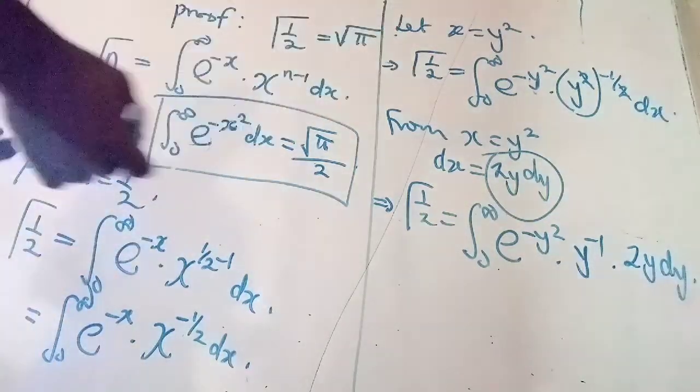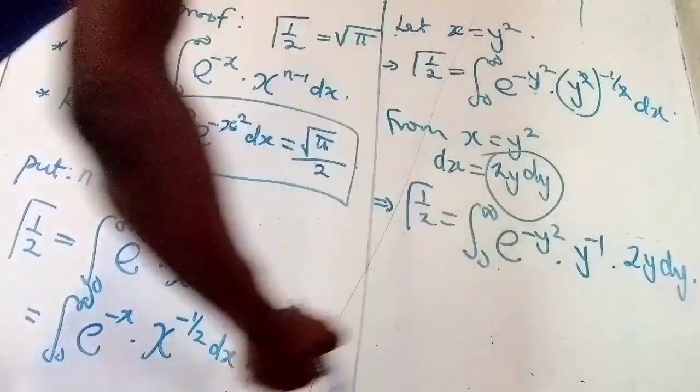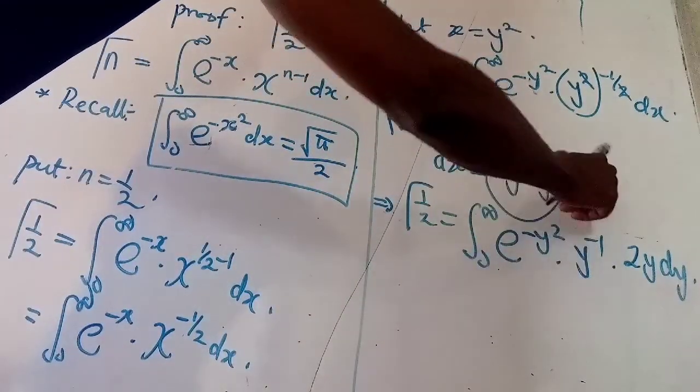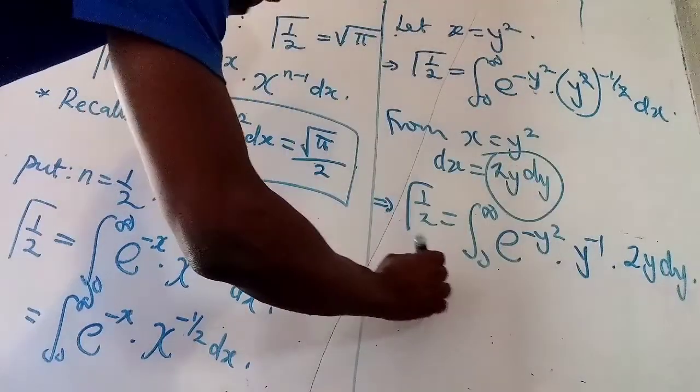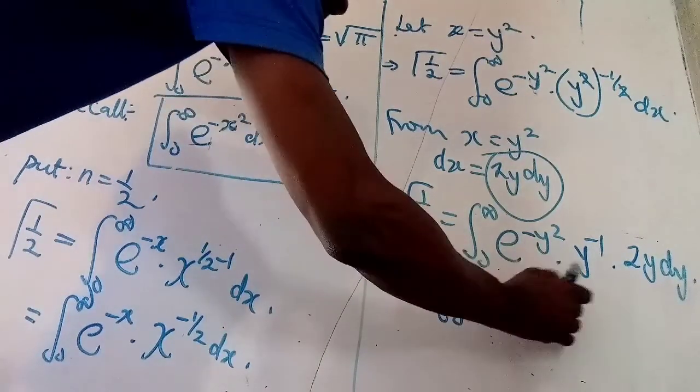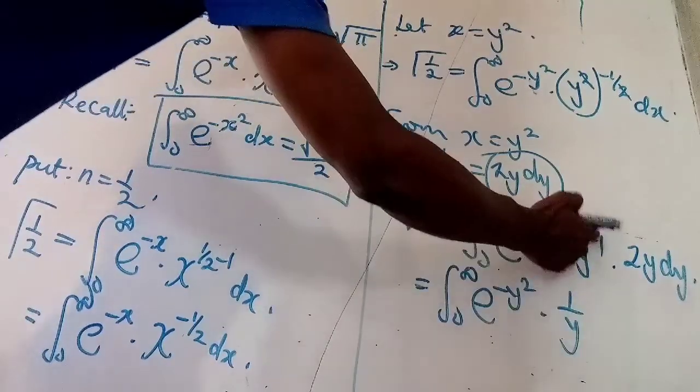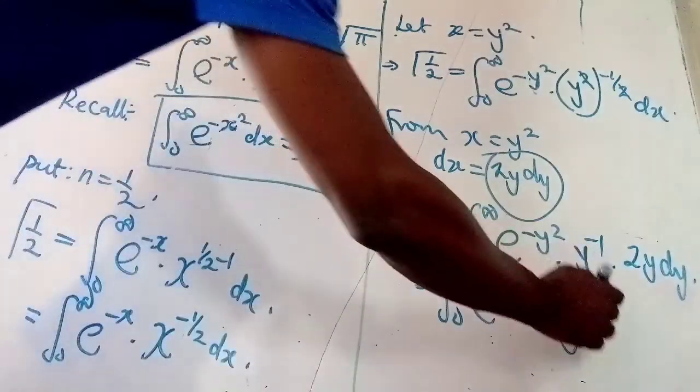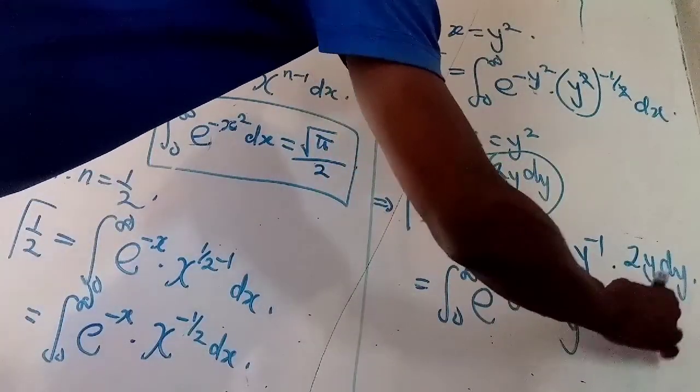So, the next thing is to simplify. As a matter of fact, this y, we cancel this y because this minus means 1 over y. So, let me show that. 0 to infinity, e to negative y squared times 1 over y because my y to negative 1 means 1 over y, times 2y dy.